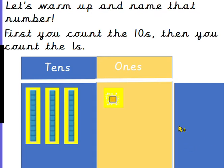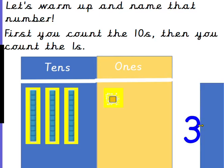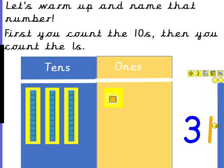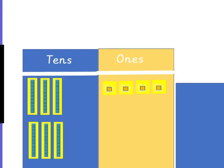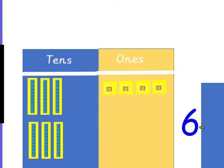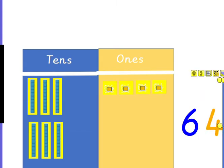Let's count the 10's first. How many 10's are there? There are 1, 2, 3 tens and how many 1's? That's right, just 1. So this is the number 31. Well done. What about this number? First you count the 10's, then you count the 1's. There are 1, 2, 3, 4, 5, 6 tens and 1, 2, 3, 4 ones. So that is the number 64.